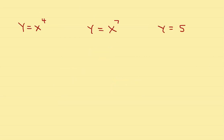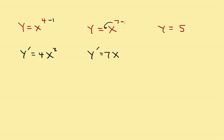Now let's look at some examples. If y equals x to the fourth, the derivative y prime equals — bring the exponent down in front and reduce the old exponent by 1 — so you get 4x cubed. On the next one, y prime equals: bring the original exponent 7 down in front and subtract 1, giving you 7x to the sixth.